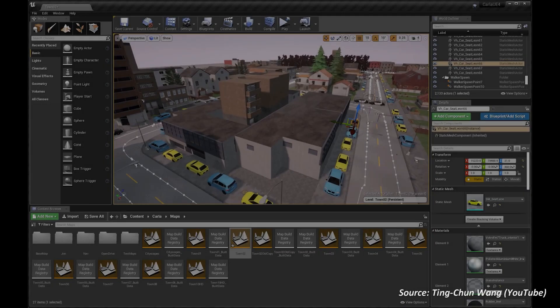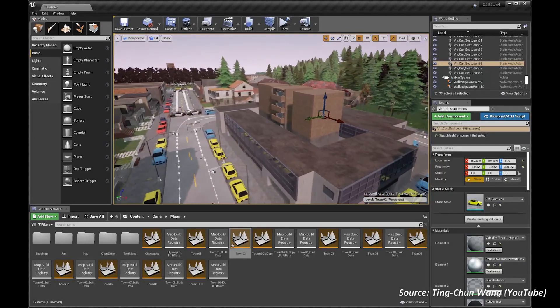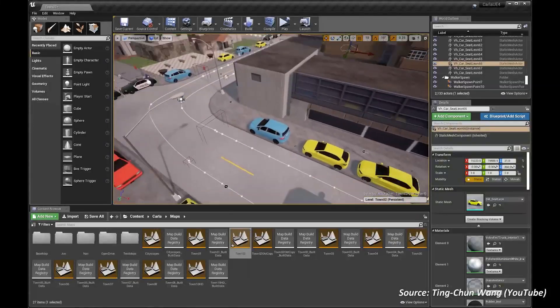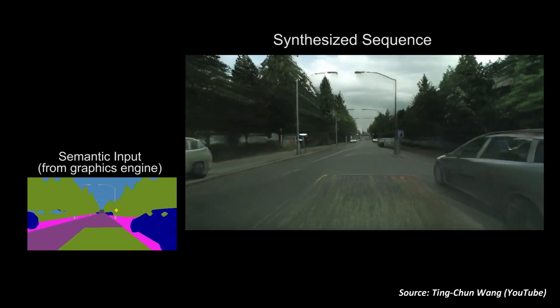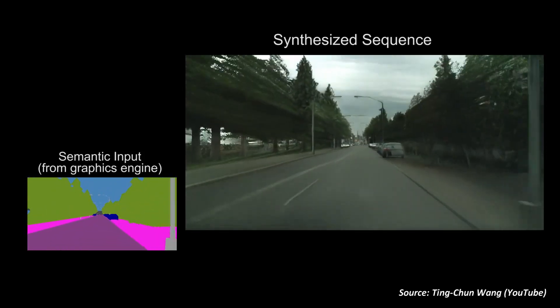They even created a sample 3D world in a traditional game engine and used their world consistent vid to vid model to render the graphic textures, giving us a glimpse of how the graphics pipeline of future games might look like.